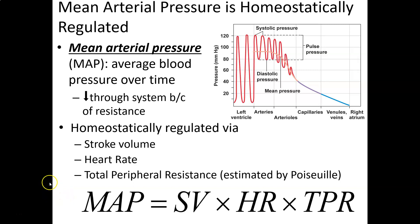In this section we'll look at the regulation of mean arterial pressure homeostatically. Mean arterial pressure is defined as the average blood pressure over time. There are a number of different ways to calculate it, but we're going to concentrate on this one: mean arterial pressure equals stroke volume times heart rate times total peripheral resistance.